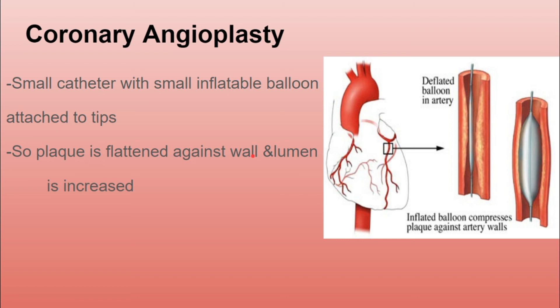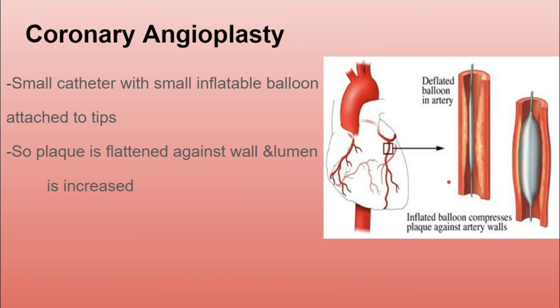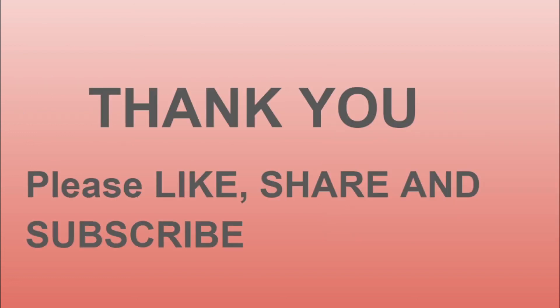To restore normal blood flow to the heart, there are mainly two options: coronary bypass surgery, where veins or arteries are connected from the ascending aorta to the distal part of the blocked coronary artery; or coronary angioplasty, where a small catheter with an inflatable balloon is inserted at the blocked part of the coronary artery and inflated so the lumen returns to its normal size. This was all about diseases related to the heart — thank you.